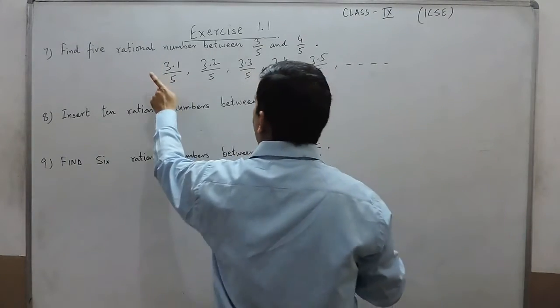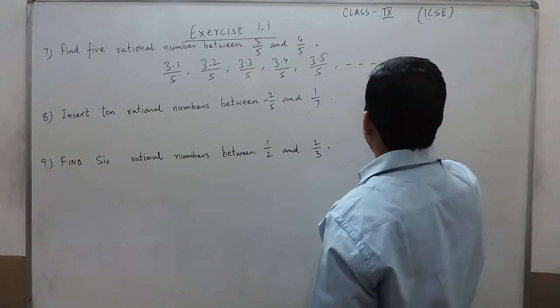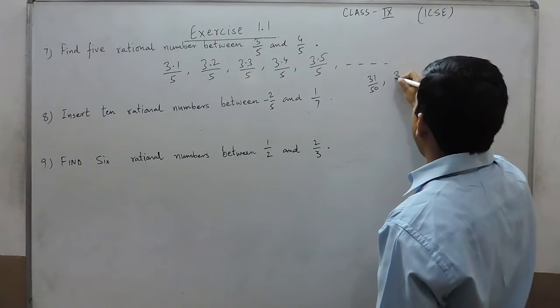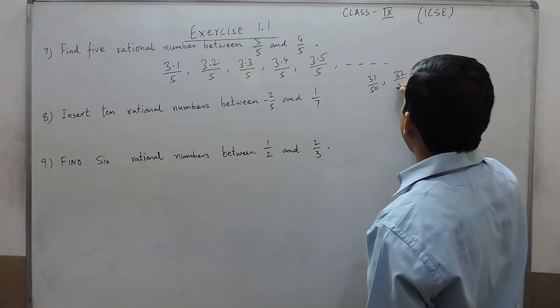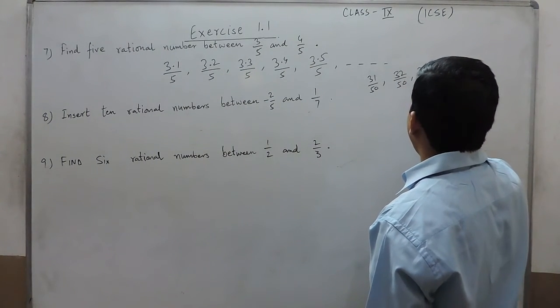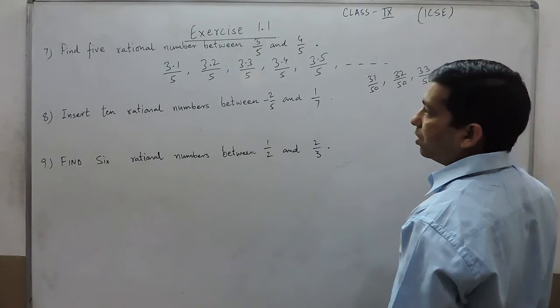For 3.1/5, I can write 31/50. For 3.2/5, I can write 32/50. And similarly it is 33/50 and so on.